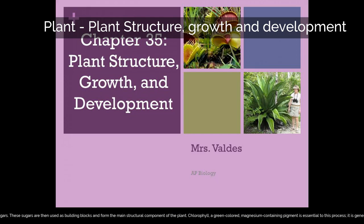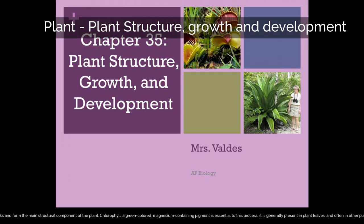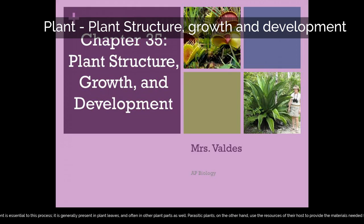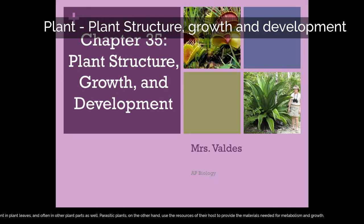Chlorophyll, a green-colored, magnesium-containing pigment, is essential to this process. It is generally present in plant leaves, and often in other plant parts as well. Parasitic plants, on the other hand, use the resources of their host to provide the materials needed for metabolism and growth.